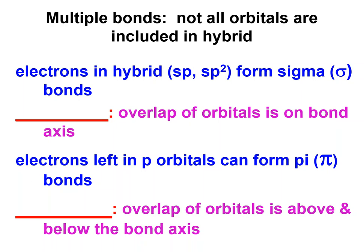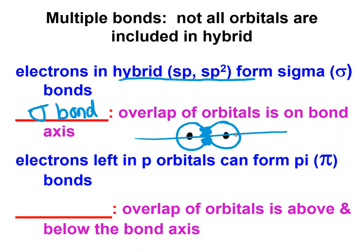Now we're going to look at how hybrid orbitals can lead to double and triple bonds. There are two types of bonds. One is formed by the hybrid, and they form sigma bonds. A sigma bond has overlap on the bond axis. If you have two atoms and their nuclei with electron clouds, the bond is where they overlap in between. The overlap is right between the two nuclei on the axis of the bond.